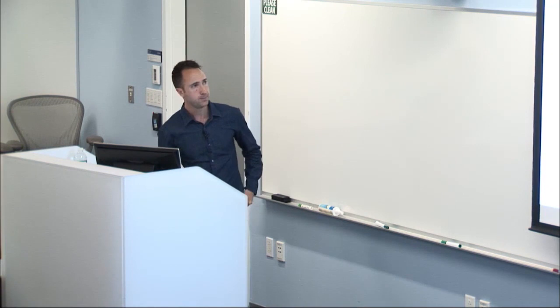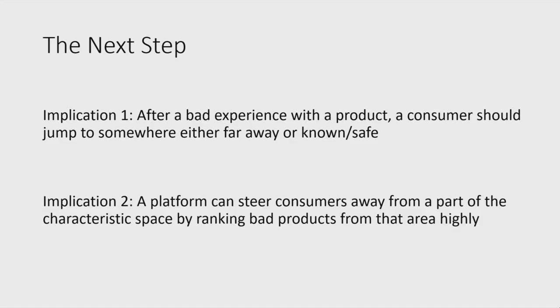A platform can steer consumers away from a part of the characteristic space by ranking bad products from that area higher. If the platform knows more about products than consumers do and wants them not to buy in a particular area, it takes the worst representative products from that area, puts them at the top of the list, and waits for consumers to experience them and move away.